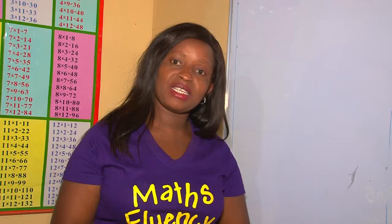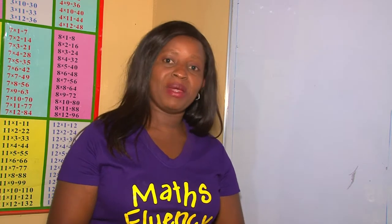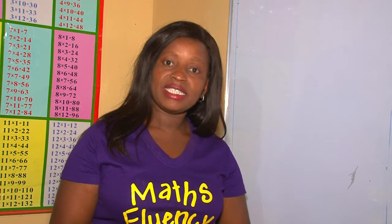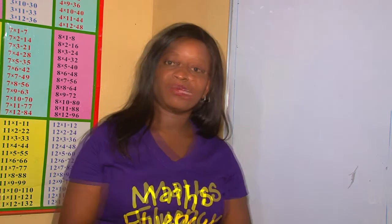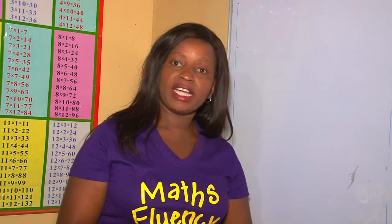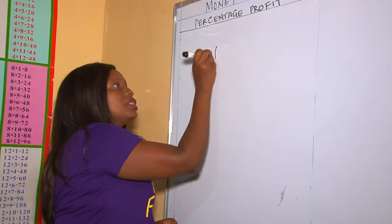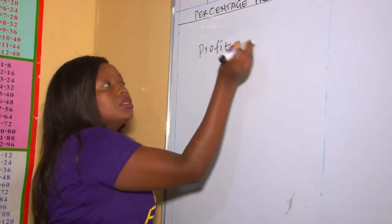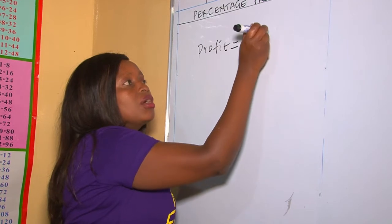From a previous lesson, we learned what profit is. We realized that profit is the extra money you make after you sell an item at a higher price than the price you bought it. To get profit, the formula is: profit equals selling price take away cost price.